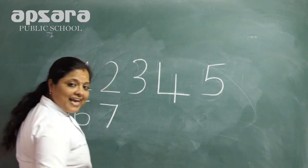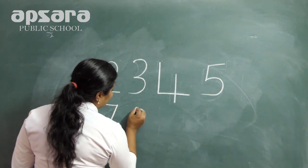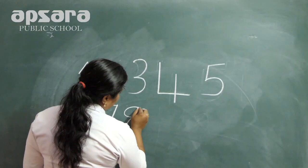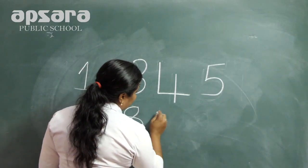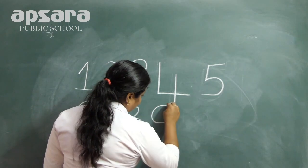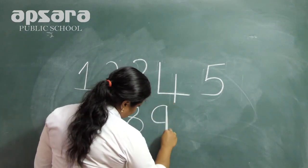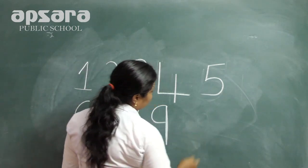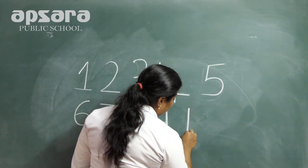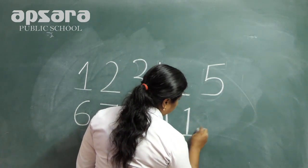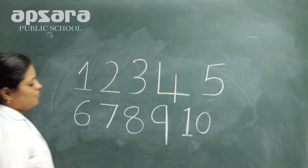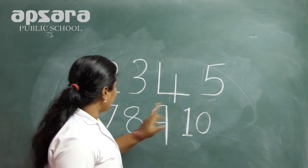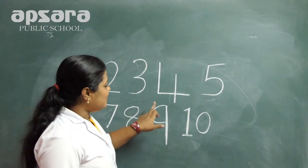This number is 7. And what is the next number? 8. Very good. And next — 9, curl and joining standing line. And the next — 10 comes with number 1 and 0. 1, 2, 3, 4, 5, 6, 7, 8, 9, 10.